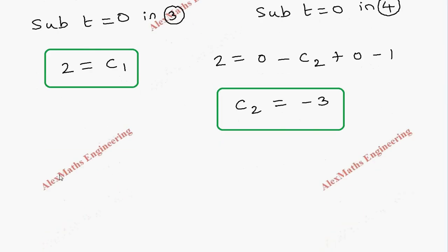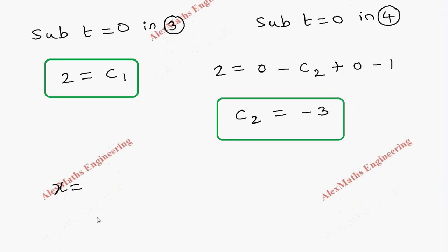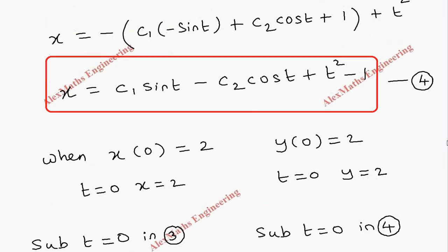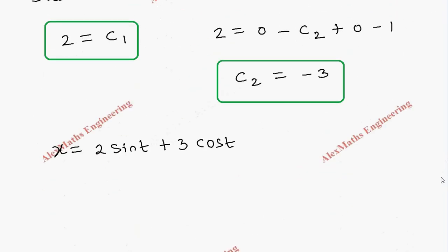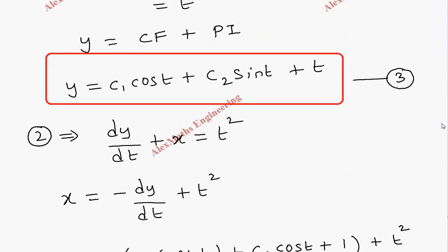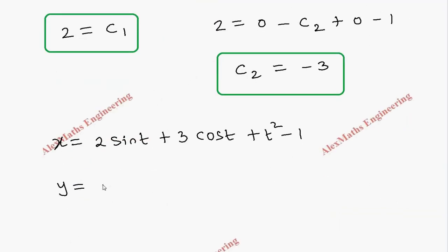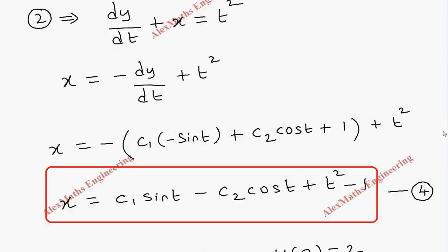Substituting the constants into the solutions, we get the final answers. x equals 2·sin(t) plus 3·cos(t) plus t squared minus 1. And y equals 2·cos(t) minus 3·sin(t) plus t. So we have found both solutions x and y.